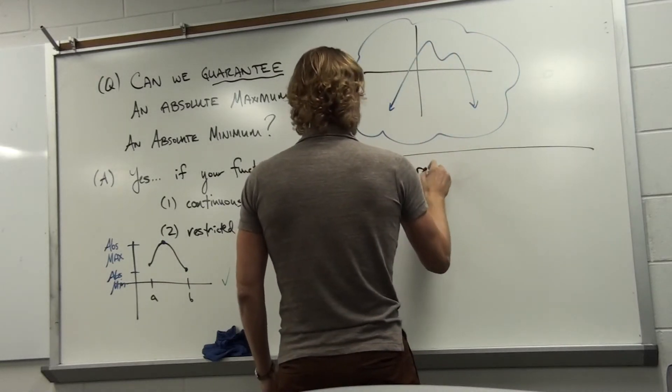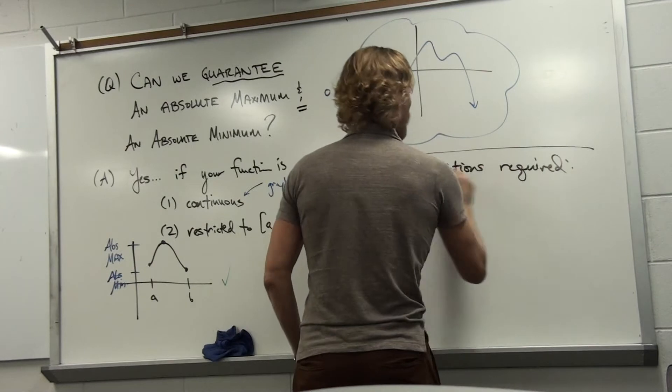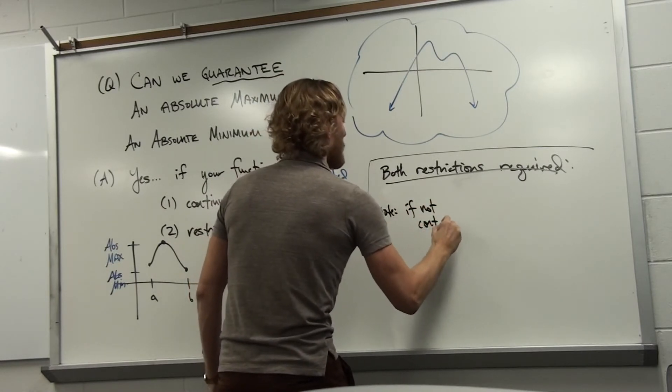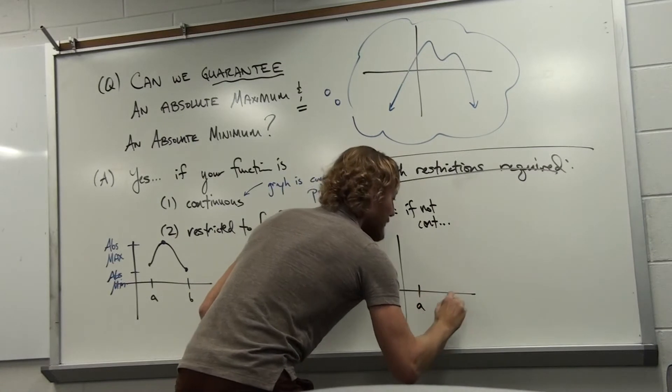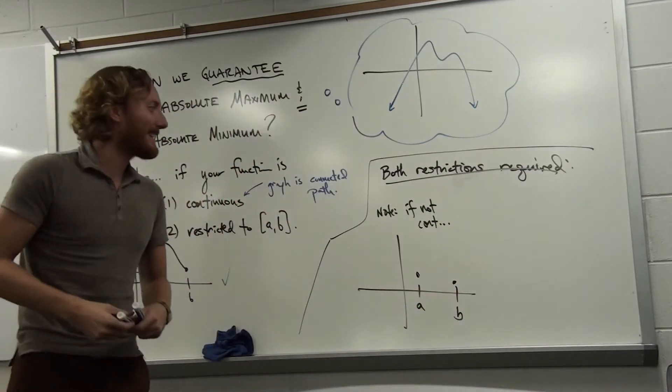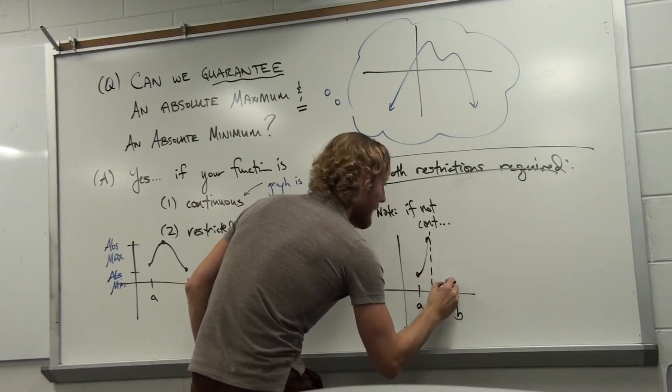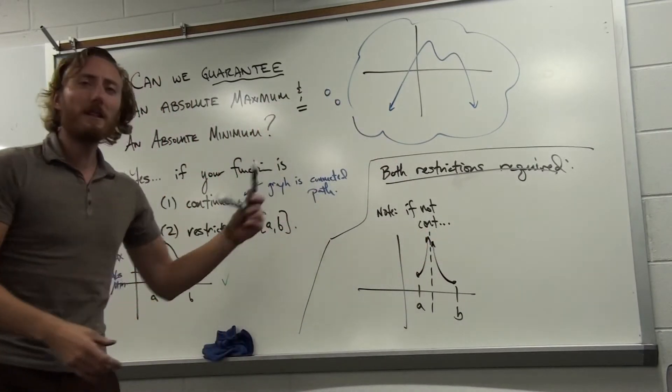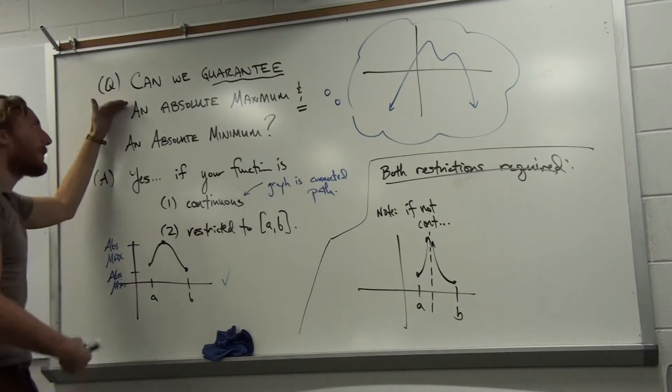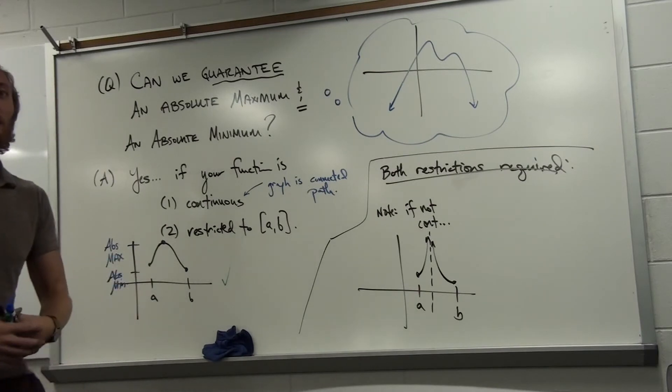Why is this? If not continuous, what can happen? Imagine going from f(a) to f(b), but if you're not continuous, you could have an asymptote. And if you have an asymptote, there's your function. The way I drew this, it has an absolute minimum but no absolute maximum. We want to guarantee both. You can't guarantee that if the function is not continuous, because you could have an asymptote.